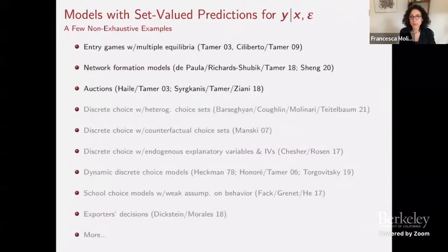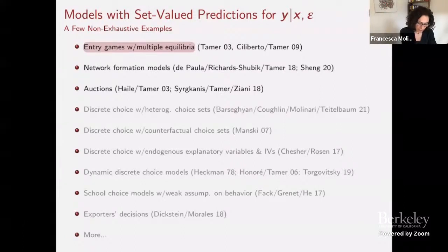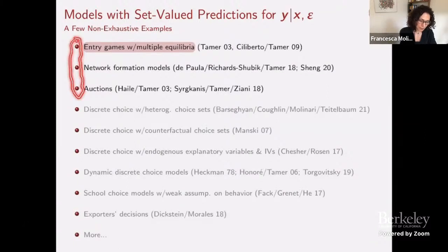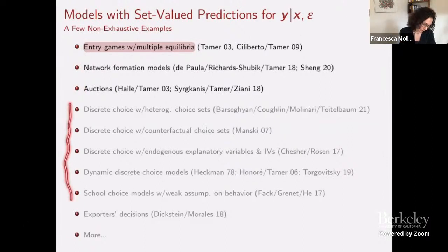Before jumping into the details, let me give a non-exhaustive list of examples to argue that models with set-valued predictions are actually quite common. The first is the entry game with multiple equilibria — that's what I'll focus on in this talk. Network formation models also belong to this collection, as do certain types of auctions. The first three involve interaction between agents, and there is also a very long list of single-agent models where set-valued predictions arise.